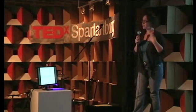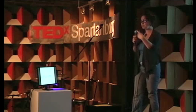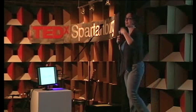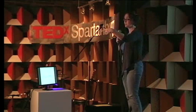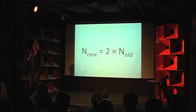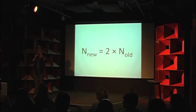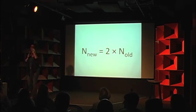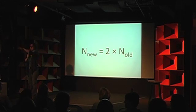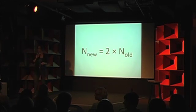We're doubling. We have two rows, so we're going to have to add two more rows. Rows three and four, raise your hands — you are fish now too. Double again: rows five, six, seven, and eight. Raise your hands. You are all part of my fish pond.